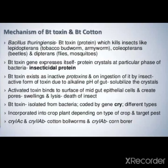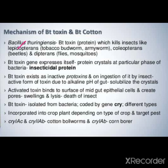So, Bacillus thuringiensis de vich ho bt toxin, jodeo isolate apna karde hai, it is a type of protein. So, e kill karde hai insects like Lepidopterans, jo ki tobacco budworms ya armyworms ne, then Coleopterans jo ki beetles ne, and Dipterans jo ki flies and mosquitoes ne. So, a sare jodei bhi bt toxin hai, inna sarei insects noo kill karde hai.